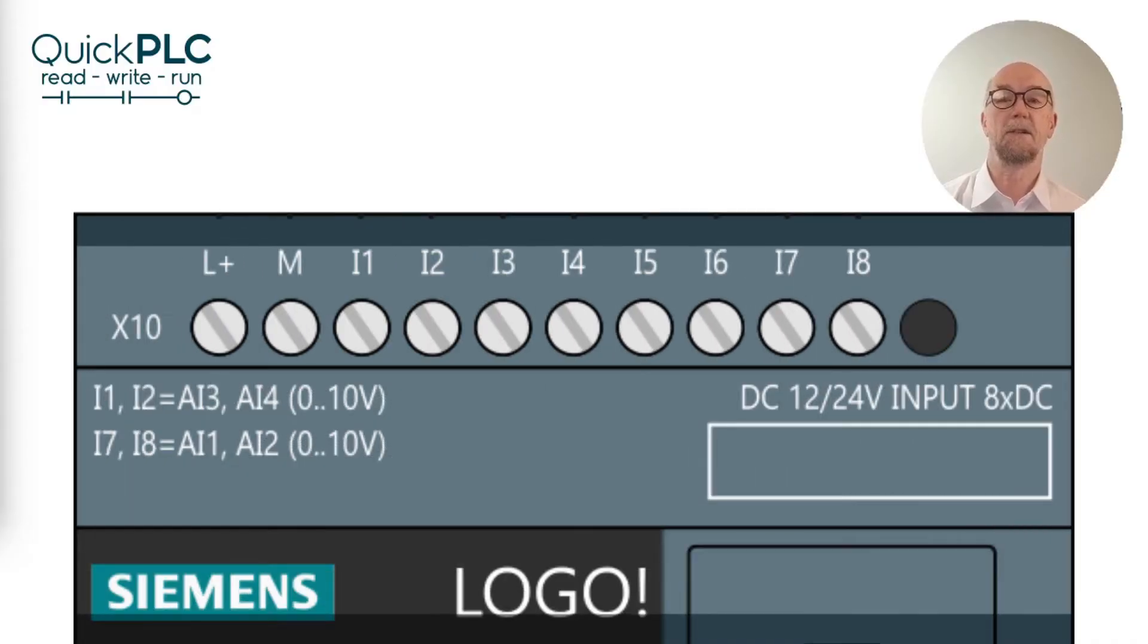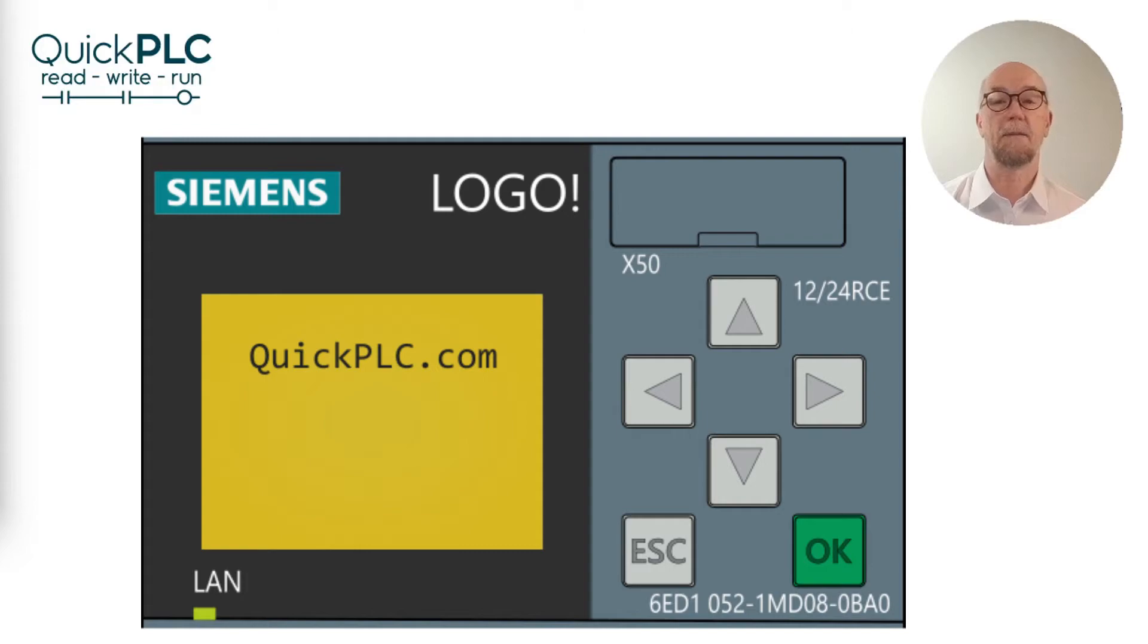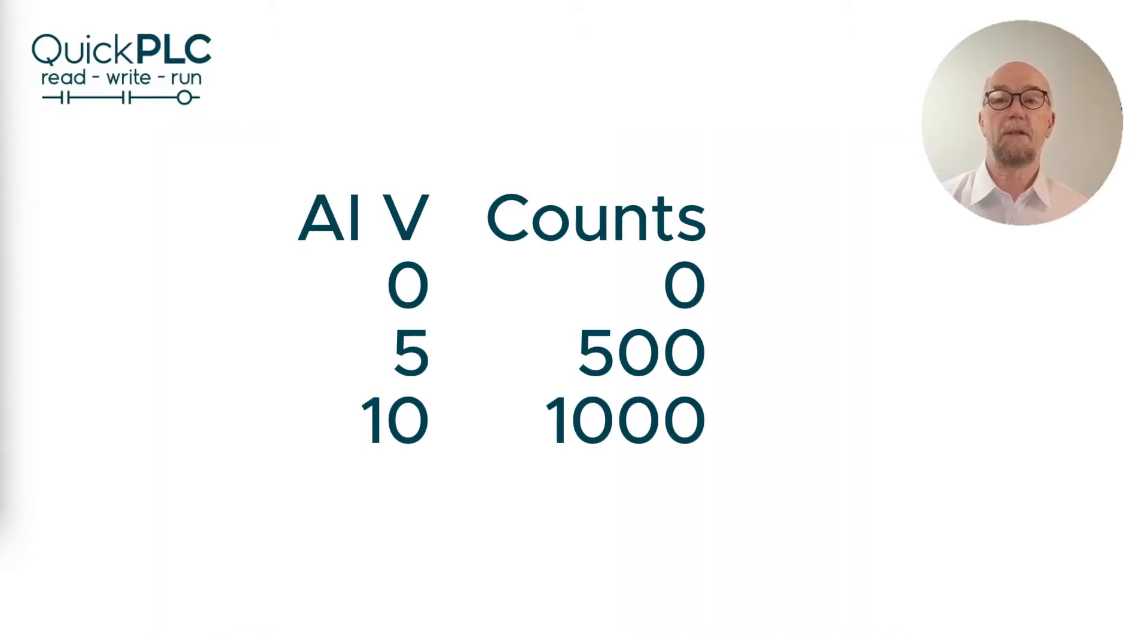Configuration is done through the Logo interface or through LogoSoft. A zero to ten volt input will result in an internal count of 1000. A zero to five volt signal can be used, but this will result in loss of half the resolution and the maximum reading will be 500.